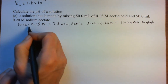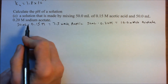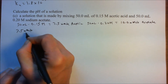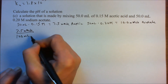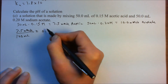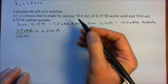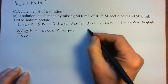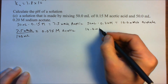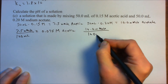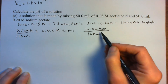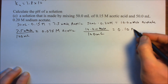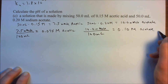The total volume after mixing is 100 mL. So the molarity of acetic acid is 7.5 mmol / 100 mL = 0.075 M, and the molarity of the acetate ion is 10.0 mmol / 100 mL = 0.10 M.